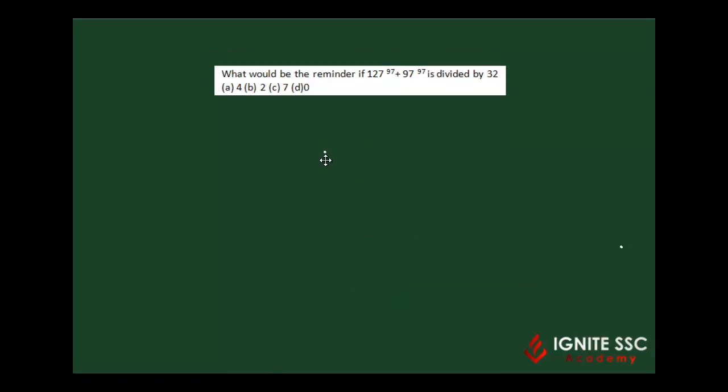Let's move on to the next question. What would be the remainder if 127^97 plus 97^97 is divided by 32?